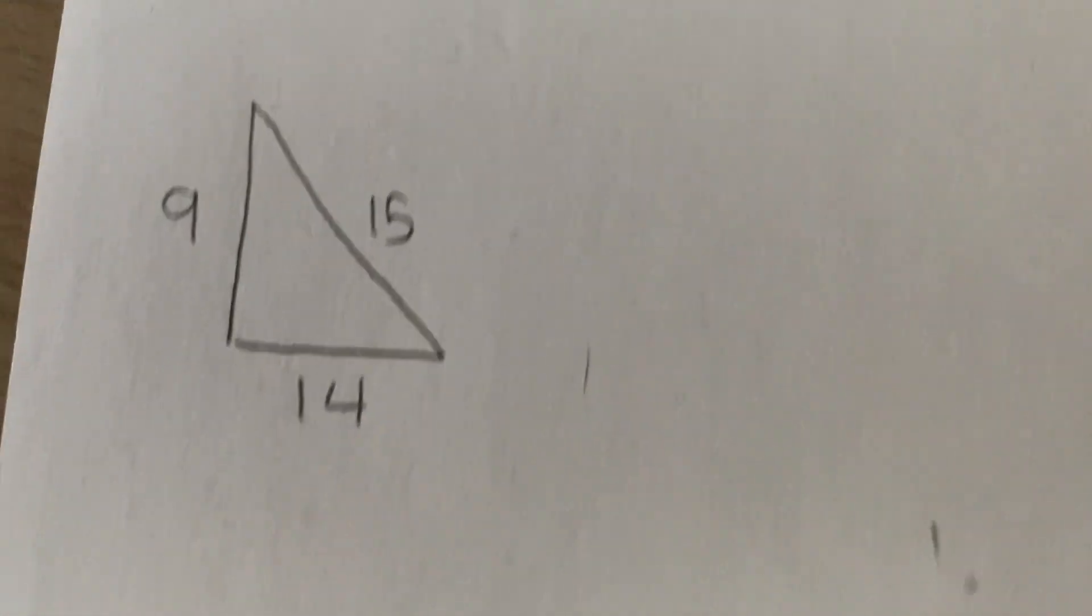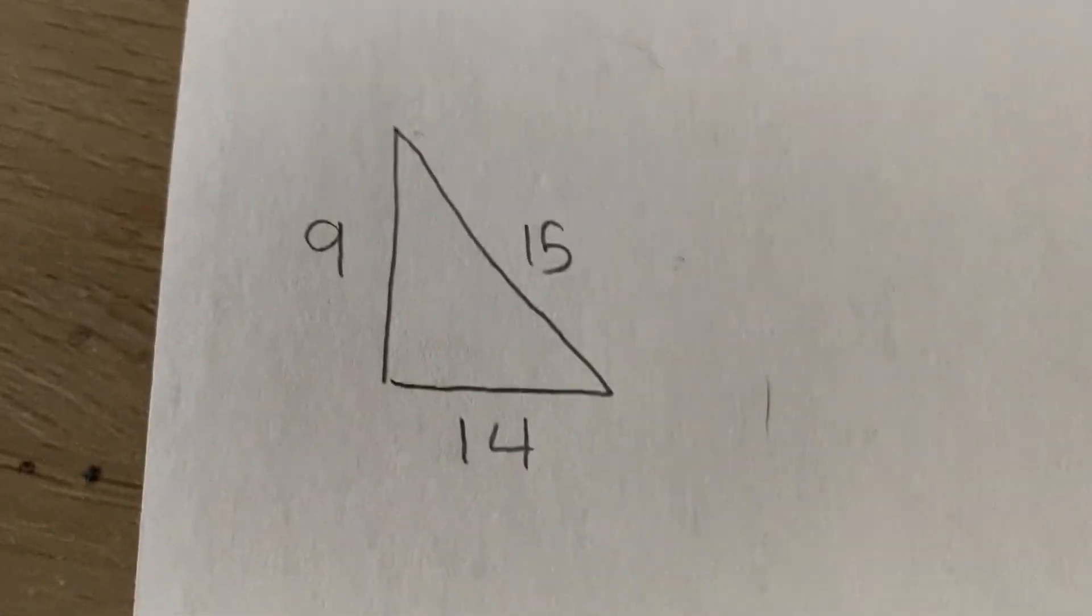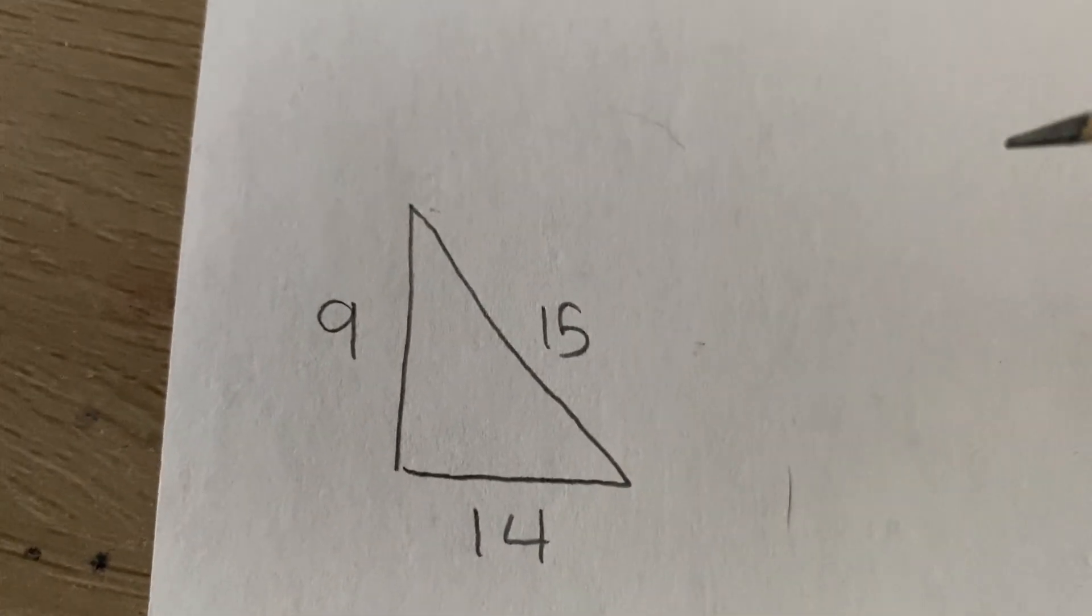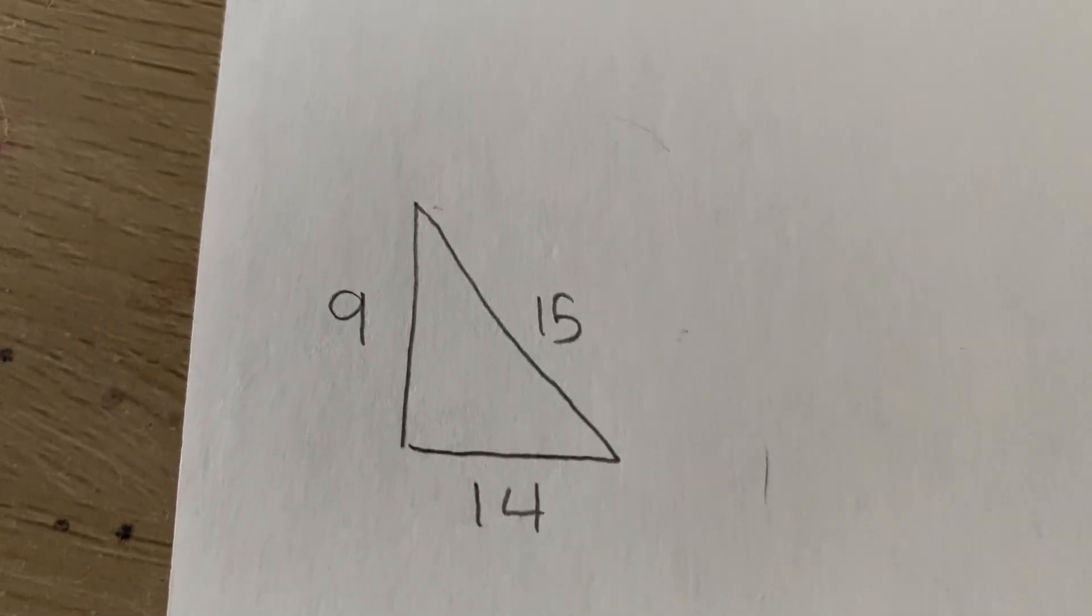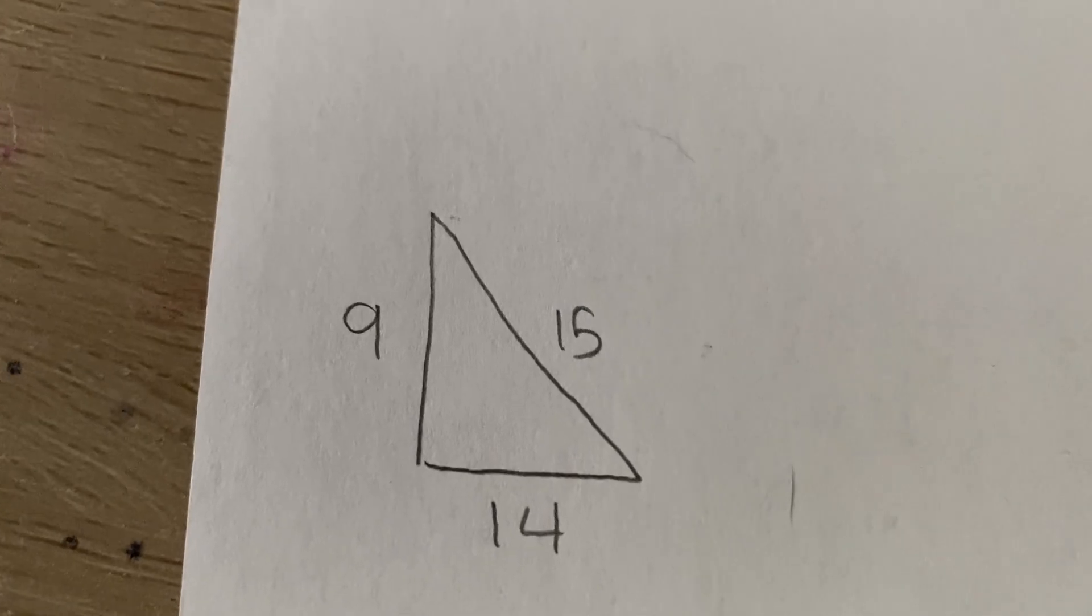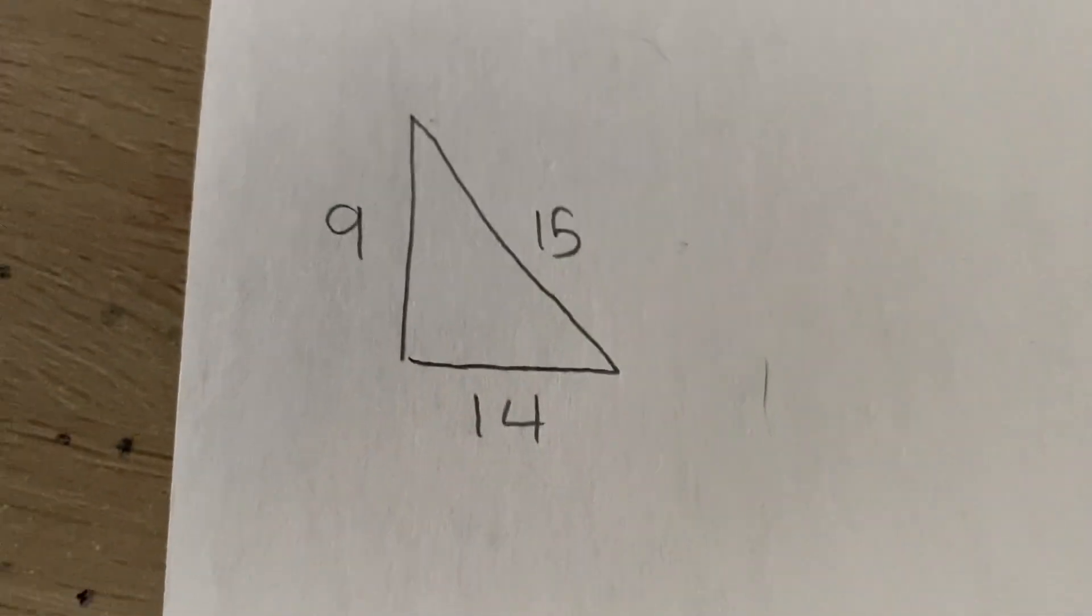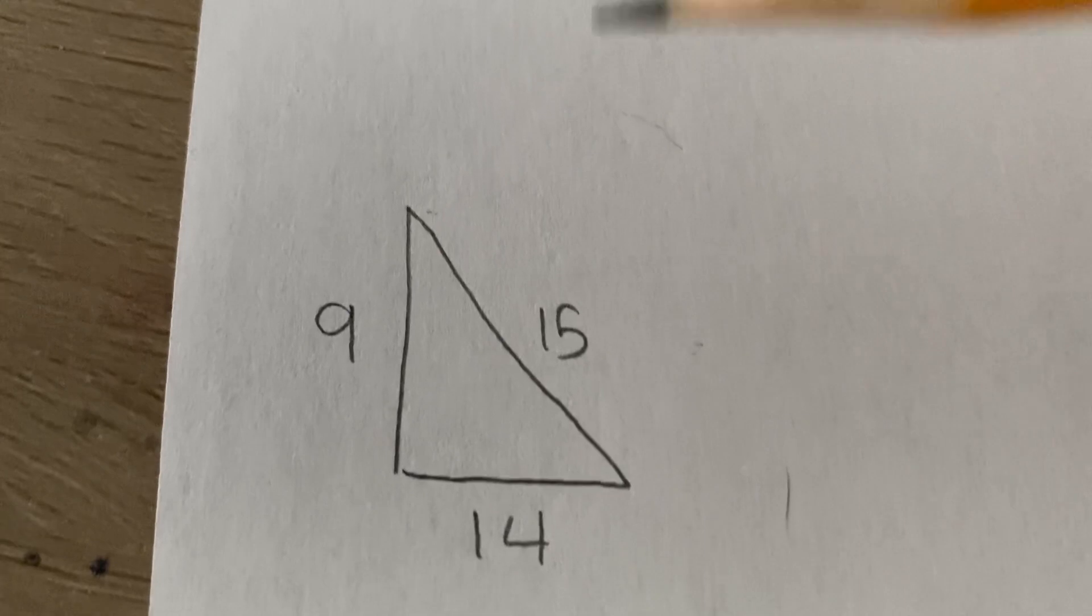Okay, now we're going to talk about Pythagorean's Theorem. Now, when you have a right triangle, Pythagorean's Theorem will work on it, right? If you do the reverse of that statement, if Pythagorean's Theorem works, it's a right triangle. So, we're going to check with this one if it makes the right triangle.